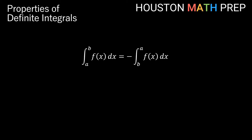One final property: the definite integral of a function from x equals a to x equals b is actually the opposite sign of the definite integral when we swap the order of the bounds. This property will become clear in our fundamental theorem of calculus video.